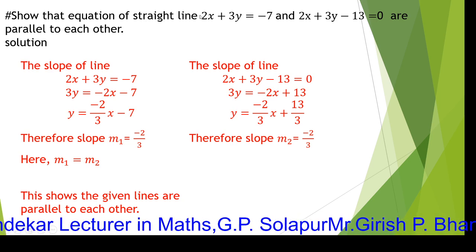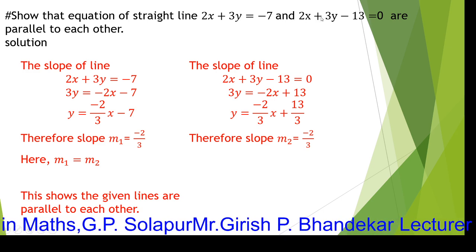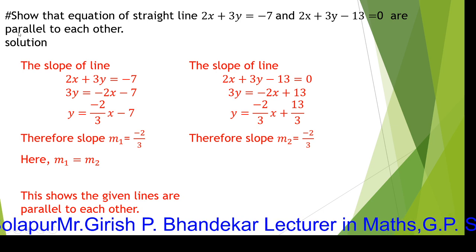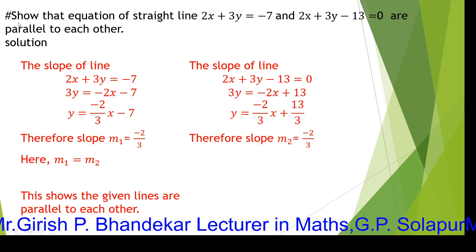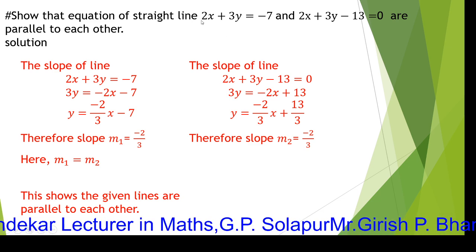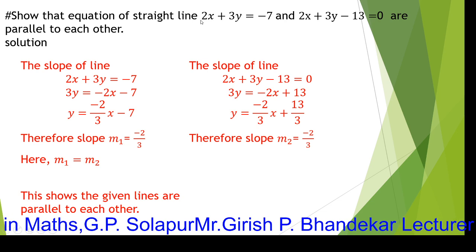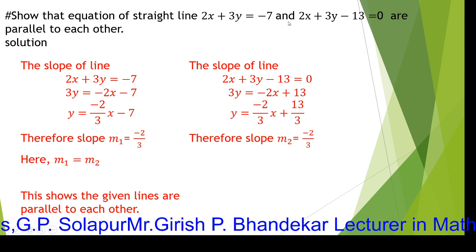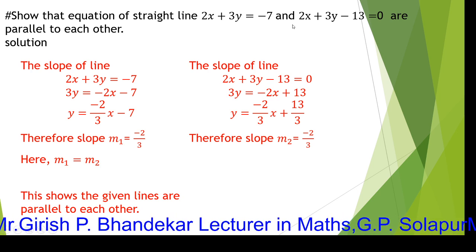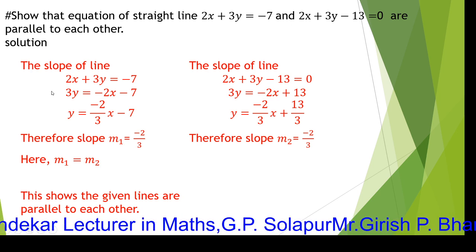Second question: show that the equations of straight lines 2x plus 3y equals minus 7 and 2x plus 3y minus 13 equals 0 are parallel to each other. We are going to check the nature of the slopes of these two lines — finding the slope of each line and checking if they are equal.